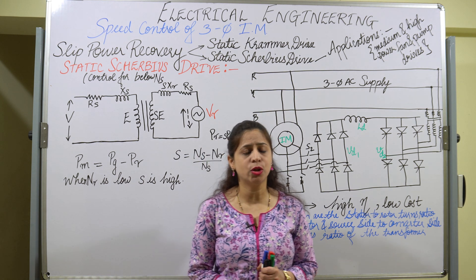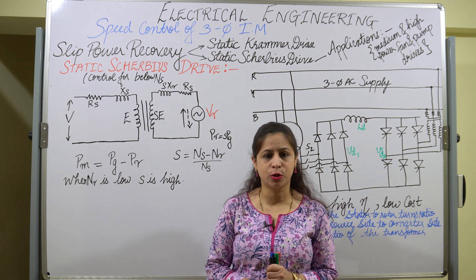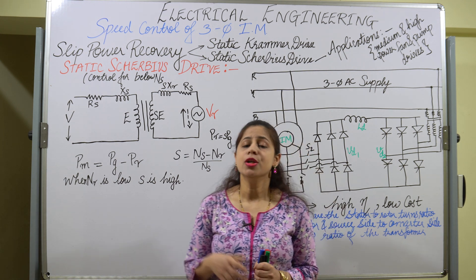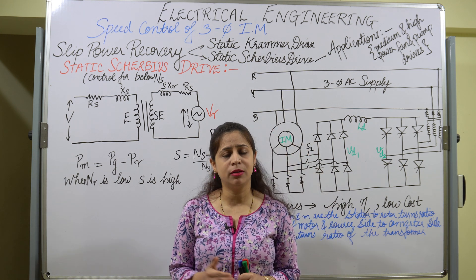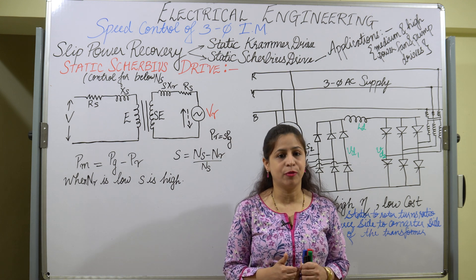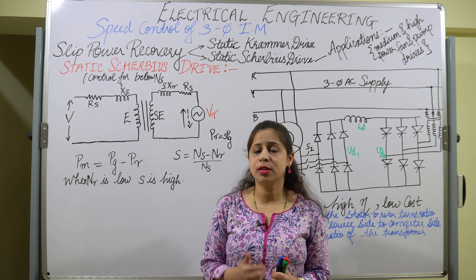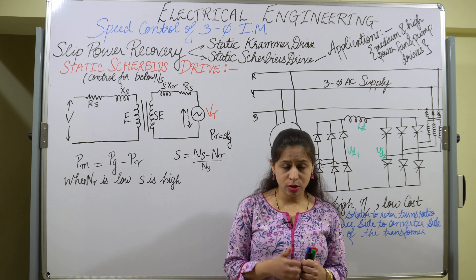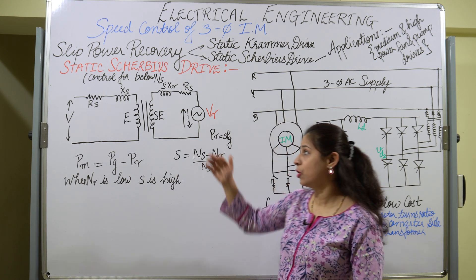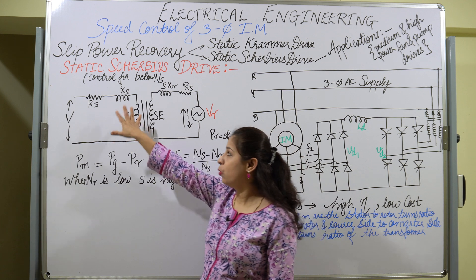Let us start with another method of speed control of three-phase induction motor, which is the slip power recovery method. In this method there are two schemes: the static Scherbius drive and the static Kramer drive. In the static Scherbius drive, it is used to do speed control below the synchronous speed.